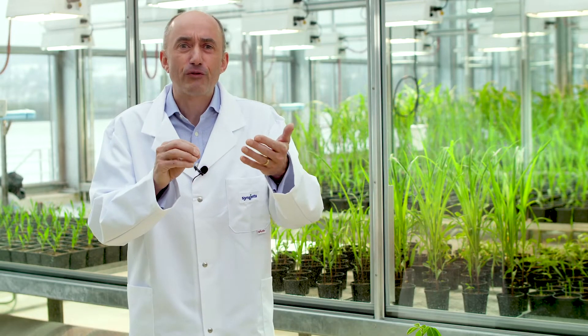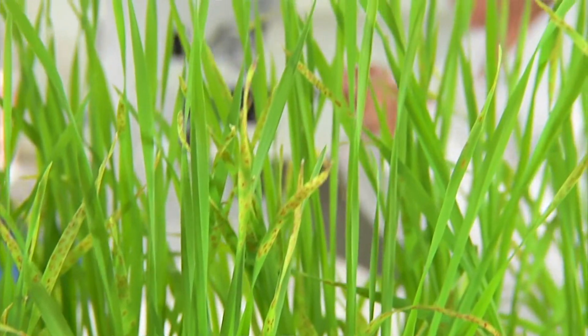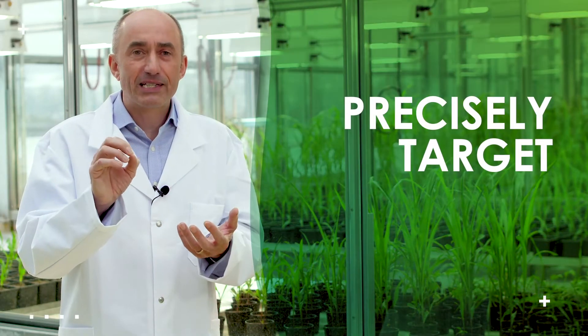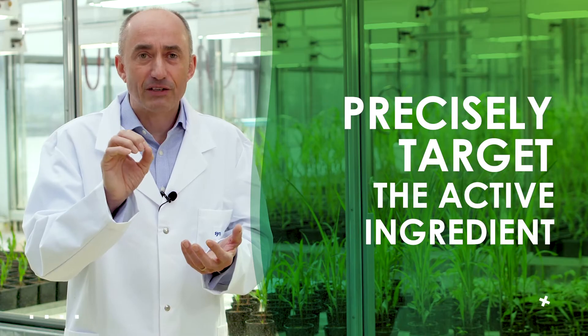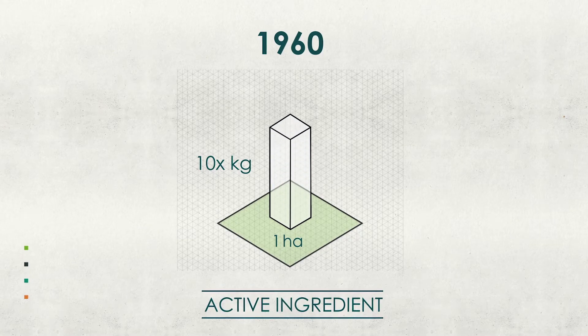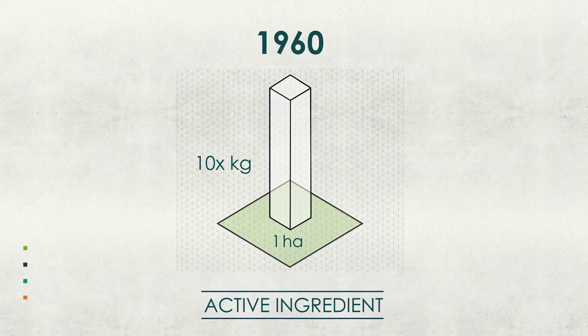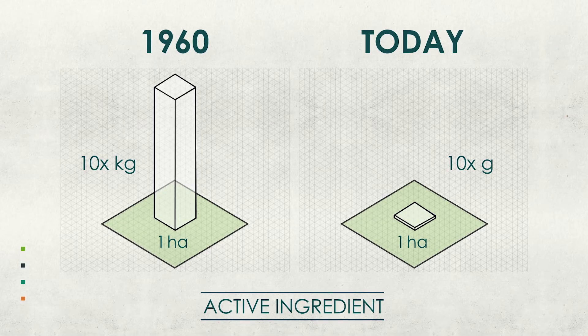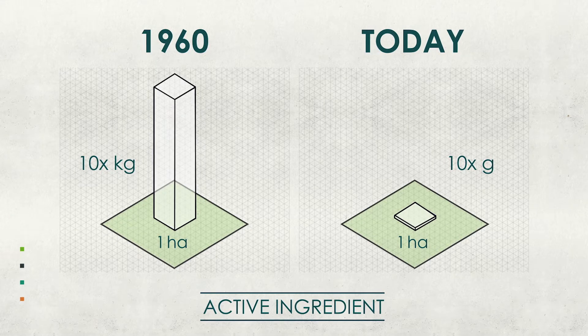Will they move into the roots? Will they move into the leaves? How do we keep them out of a fruit, for example? We can use these to design the molecules, and our chemists are really clever at using that science to precisely target the active ingredient exactly where we need it to do its job. This has had a huge benefit — back in the 1960s there were tens of kilos of active ingredient being applied to a hectare of a field; today it's tens of grams, miniscule, because of this precision.